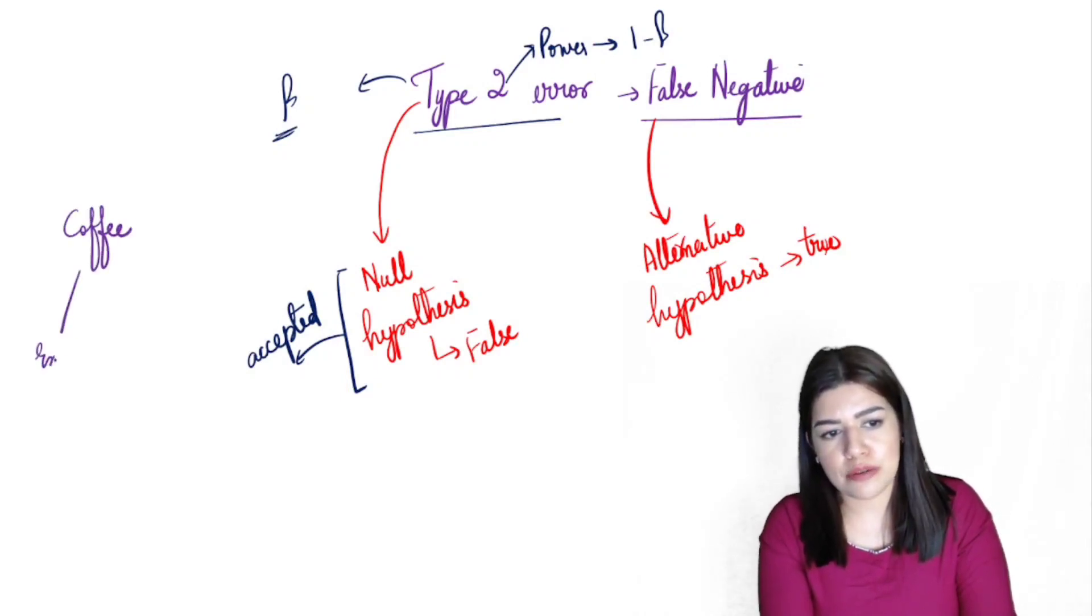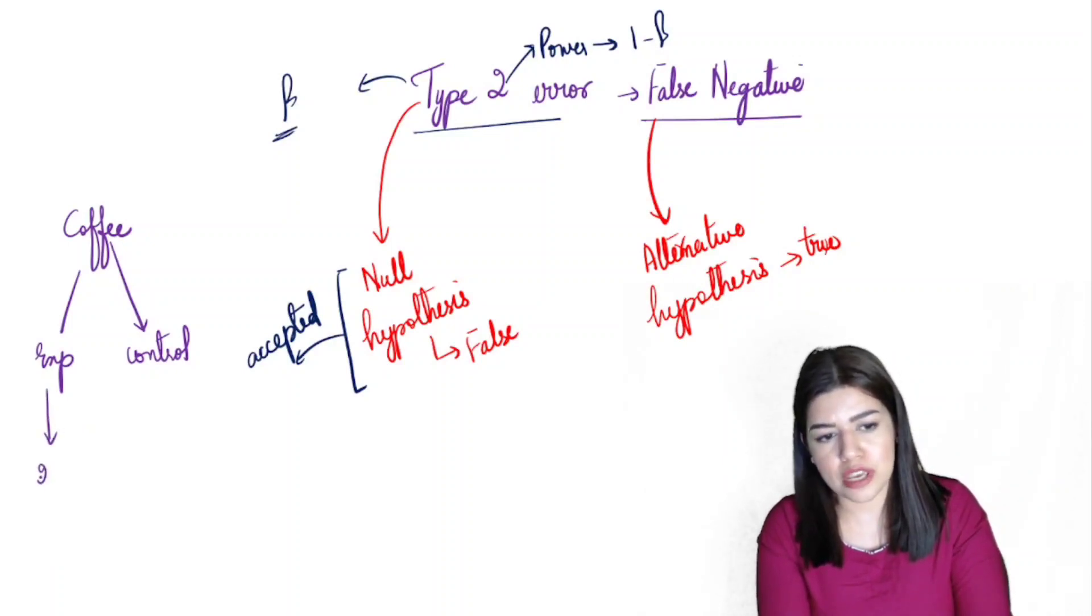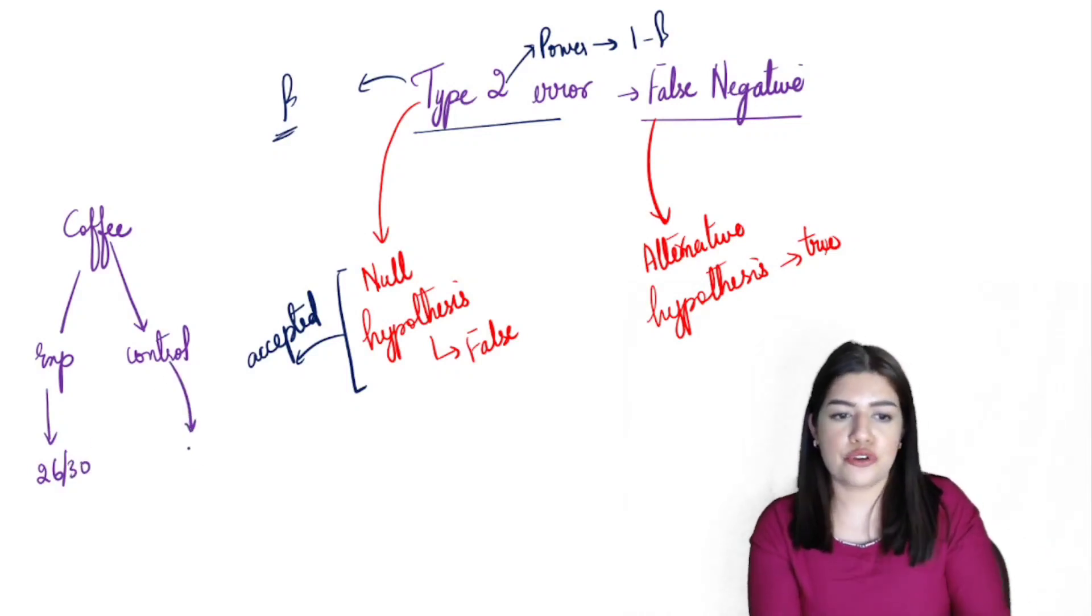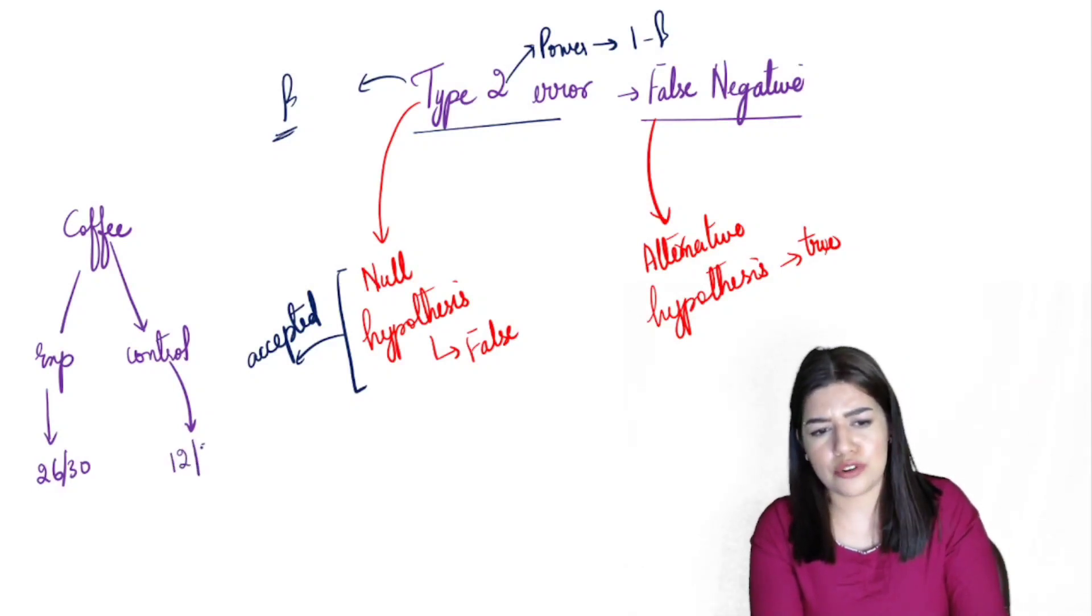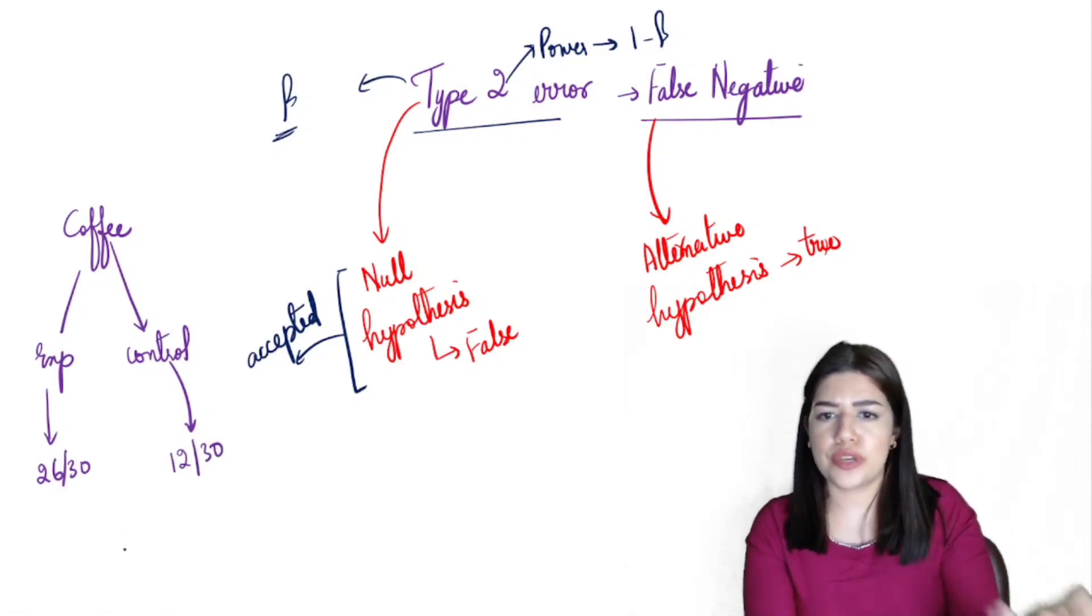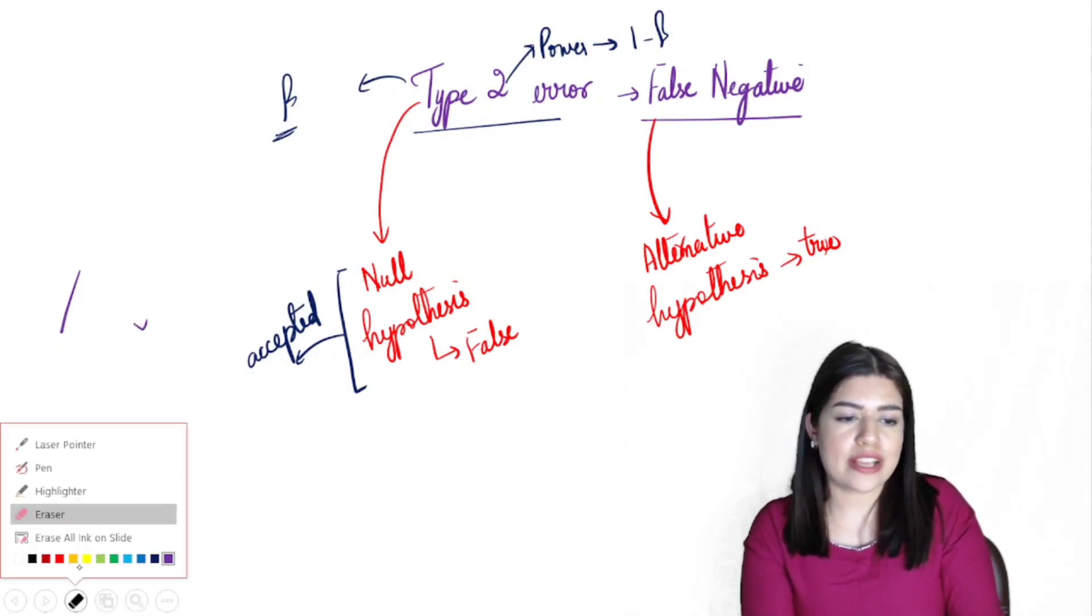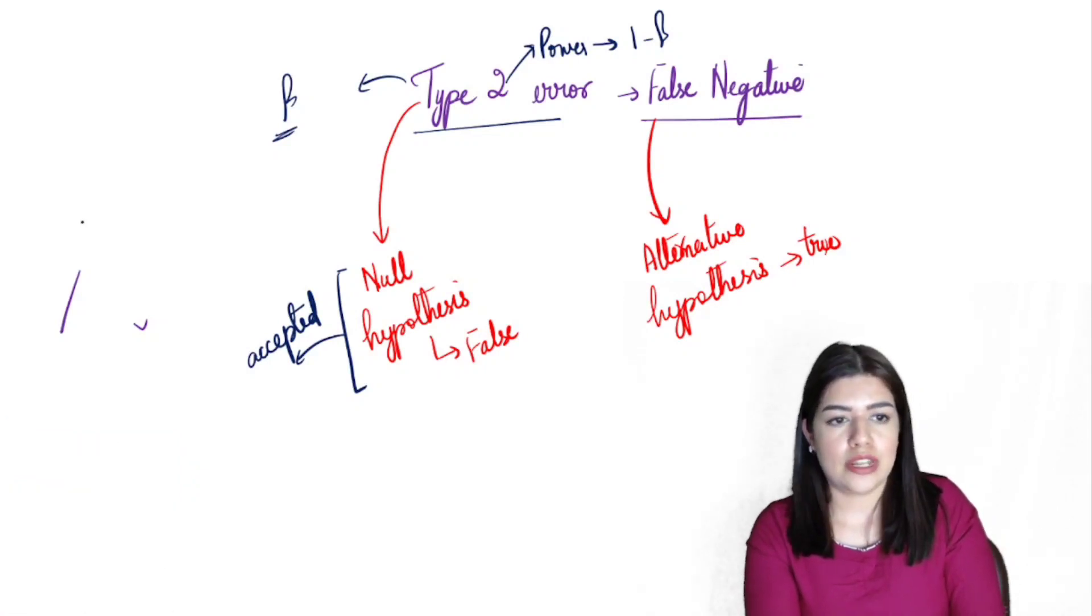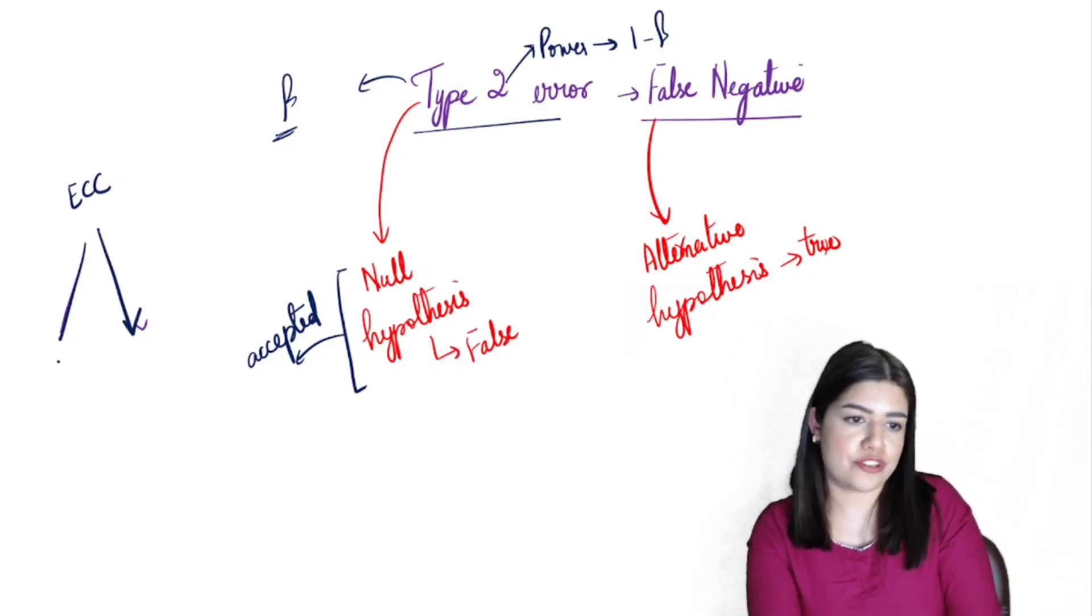We'll take our same coffee example again. In reality, coffee given to the experimental group and not to the control group is supposed to bring about a change. Let's say concentration values came out to be 26 out of 30, whereas for the control group, ideally they should be around 12 or 13 out of 30. Or if this confuses you, we can take another example. Let's talk about extracurricular activities, how they can be beneficial for the mental health of a child.